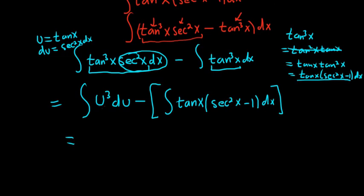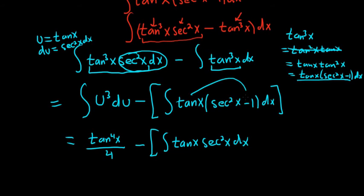And this is equal to, I'll go ahead and integrate this one. It'll be u to the 4 over 4. So it'll be tangent to the 4, because u is tangent over 4. I'll hold off on the c until the end, minus a bracket. This will be the integral of tangent x, secant squared x, dx. Let's break it up into two integrals, and then minus tangent x. So minus the integral of tangent x, dx.